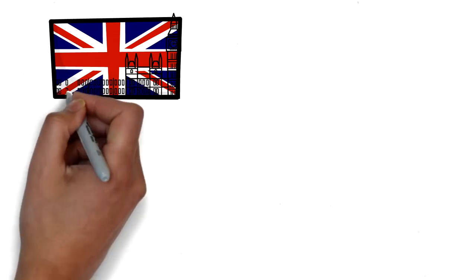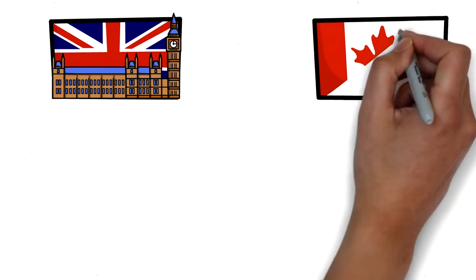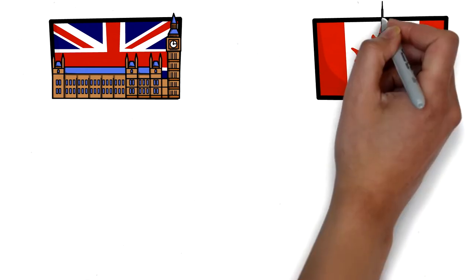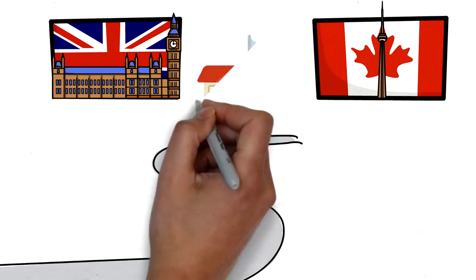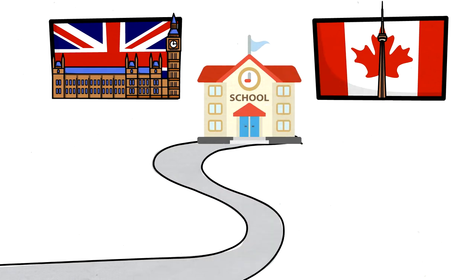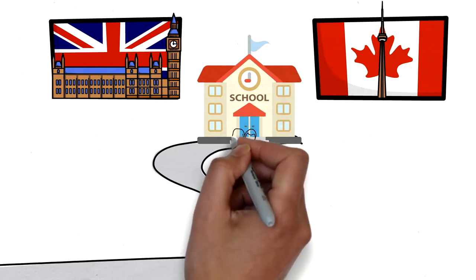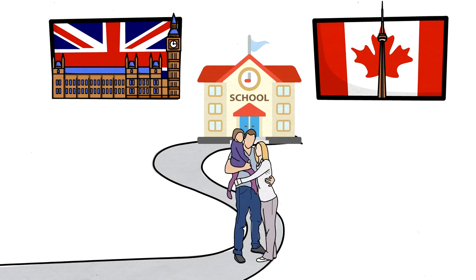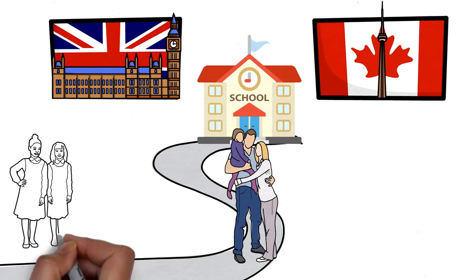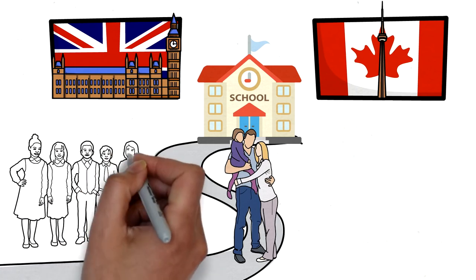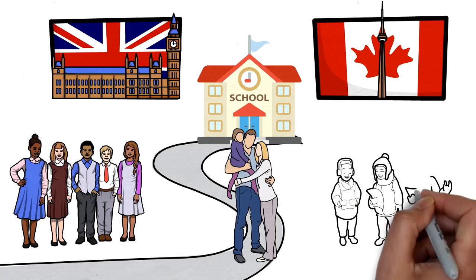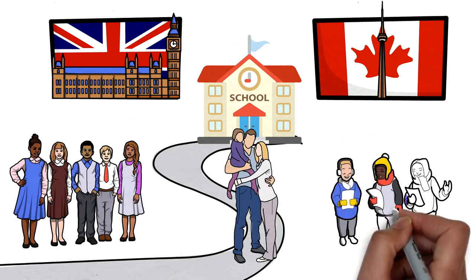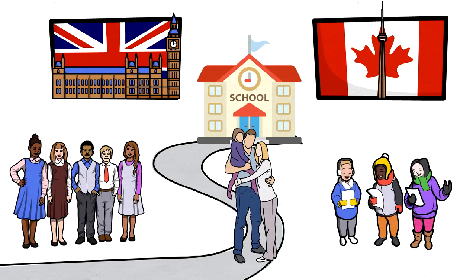Now let's compare education in both countries — both elementary and higher education. Both countries have public and private schools. The good news for immigrants is that if you go to UK, your children get free education in public schools whether you arrive on a work permit or as a permanent resident. The same applies in Canada — kids get free public education regardless of immigration status.